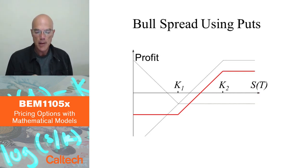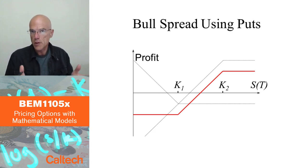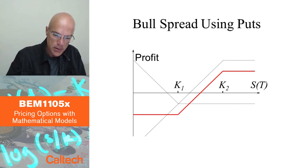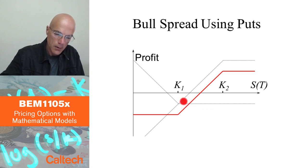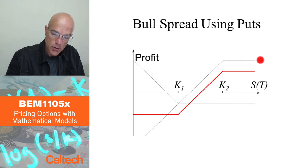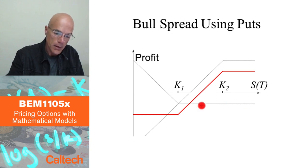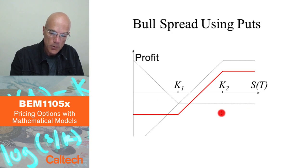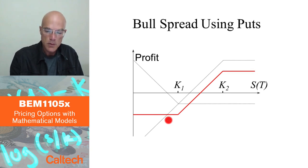This is the same bull spread from the previous slide. Here the point is to show you can also do it using puts. You buy a put with strike price K1 — that's the long put payoff — and you sell a put with strike price K2 — the short put payoff. Combining these two gray positions gives you the bull spread type payoff.